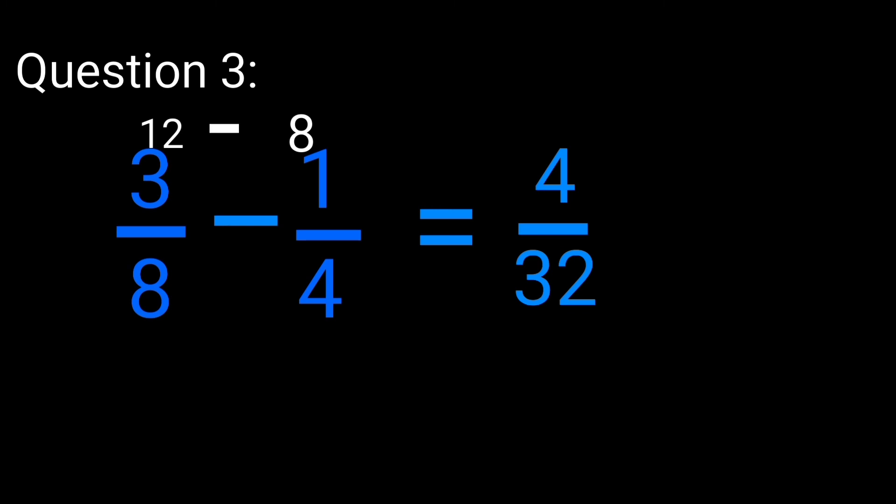4 over 32 is not yet the correct answer. What number is going to divide 4 and 32? That number is 4. So you go ahead and divide it to get it to its simplest form. 4 divided by 4 is going to give you 1, while 32 divided by 4 is going to give you 8. Now the correct answer to this question is 1 over 8. See, pretty simple if you follow the right steps. Remember you have to start multiplying from the top left in order to get the correct answer.